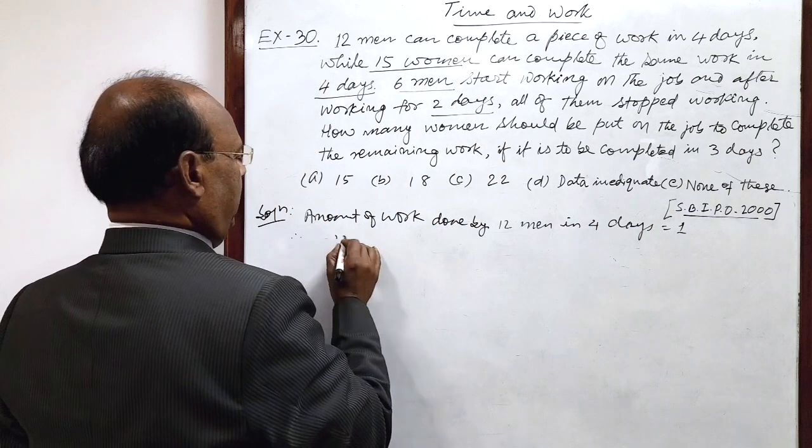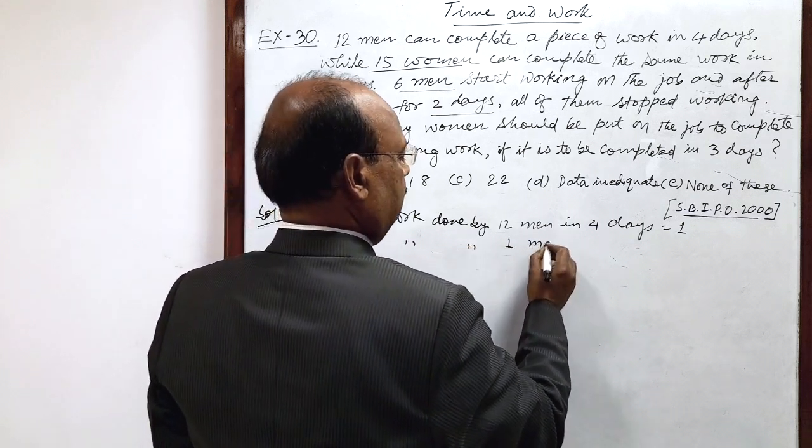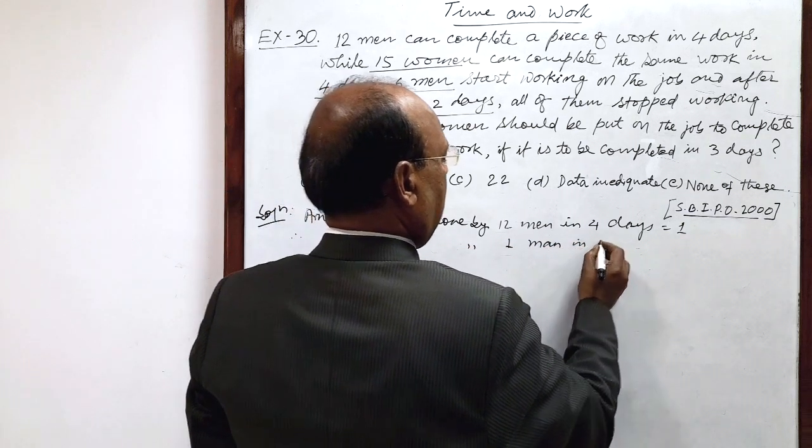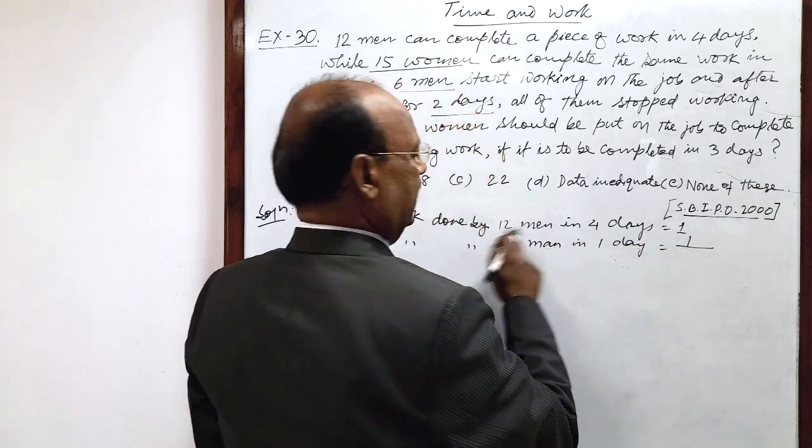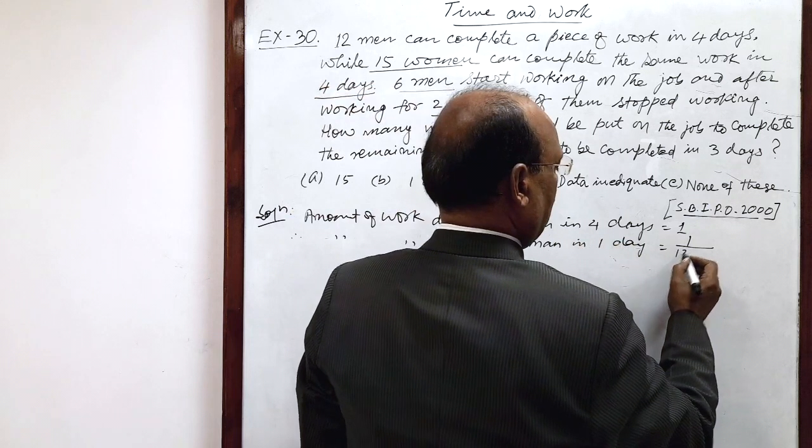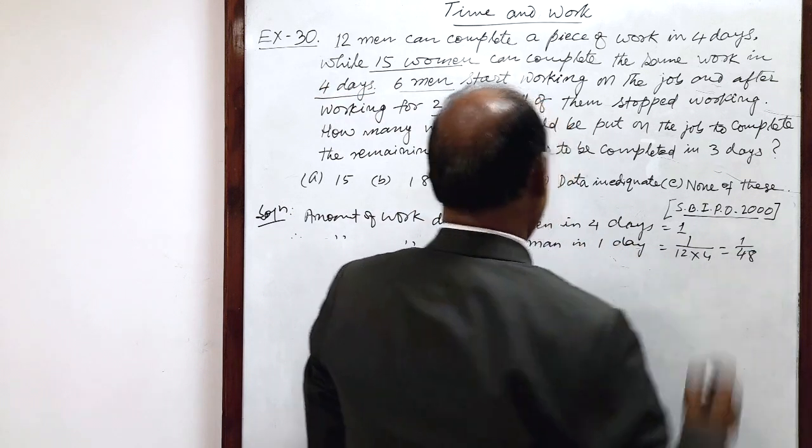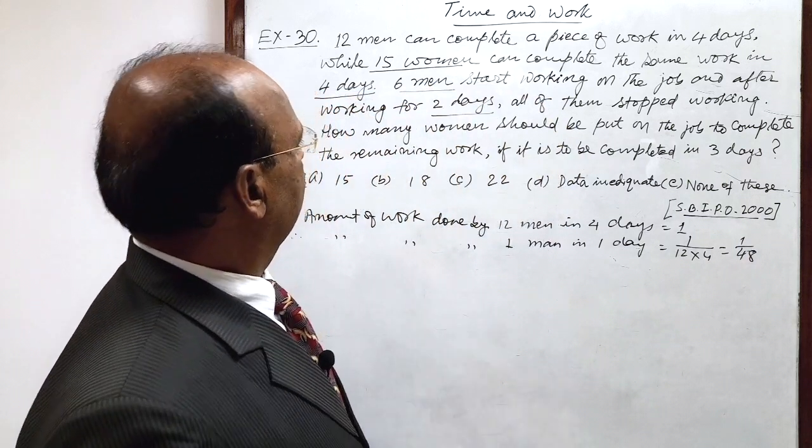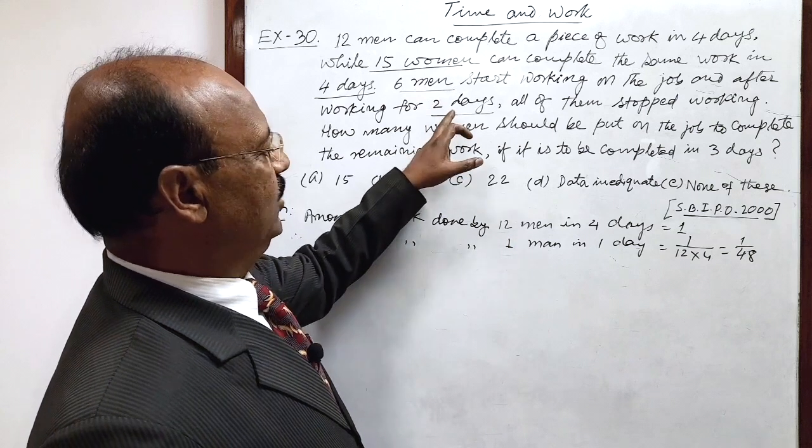Therefore, the amount of work done by 1 man in 1 day is 1 upon 12 into 4, which equals 1 by 48. Now we have to calculate the amount of work done by 6 men in 2 days.